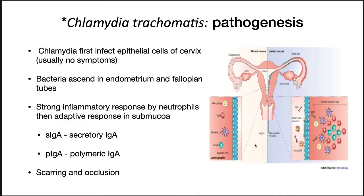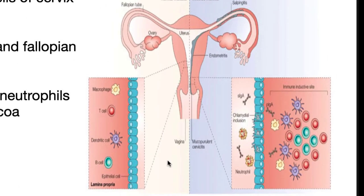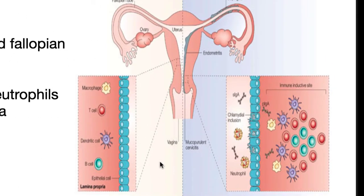Chlamydia trachomatis elementary bodies infect the columnar epithelial cells of the cervix, which often cause few if any clinical symptoms. The bacteria can ascend to infect the endometrium and the fallopian tubes. The inflammatory reaction is characterized by an influx of macrophages and neutrophils and the formation of immune inductive sites in the submucosa.